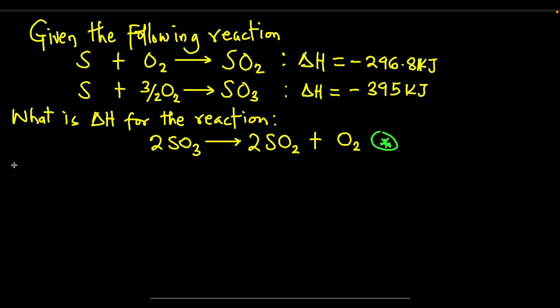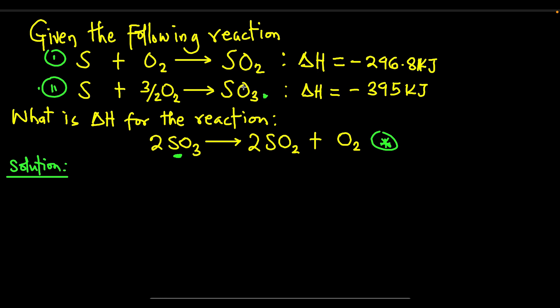Let's apply the concept from the previous example. Looking at the overall reaction, I see SO3 on the reactant side. Running through the two equations, SO3 is found in equation 2. However, in equation 2, SO3 is on the product side, but in the overall equation SO3 is on the reactant side. So we need to reverse equation 2 so that SO3 comes to the reactant side.